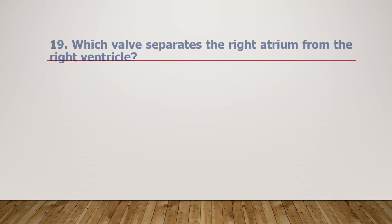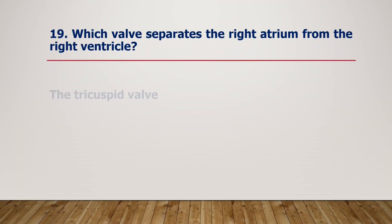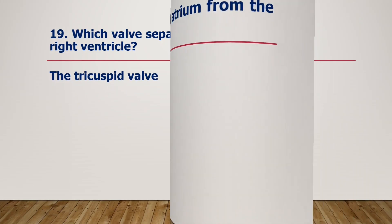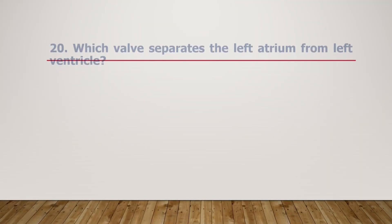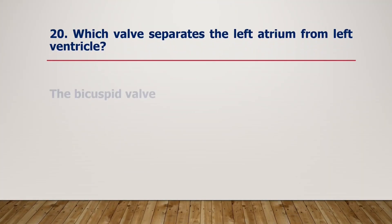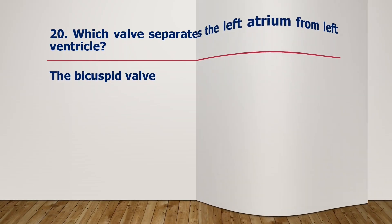Which valve separates the right atrium from the right ventricle? The tricuspid valve separates the right atrium from the right ventricle. Which valve separates the left atrium from the left ventricle? The bicuspid valve separates the left atrium from the left ventricle.